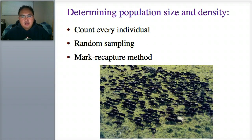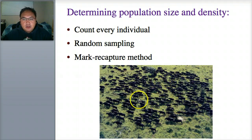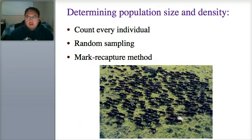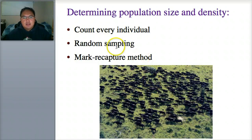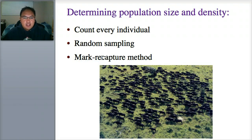So how do you determine size and density? The simplest way to do it is just count — literally go 1, 2, 3, 4, 5, 6. You also do random sampling. In random sampling, if in one area there's about 10 individuals and there are 5 different squares of 10, you can estimate there's probably about 50. And then mark and recapture — they mostly do this for aquatic animals — where they give animals a mark or a tag, and depending on how many come back, you can guess the population size.